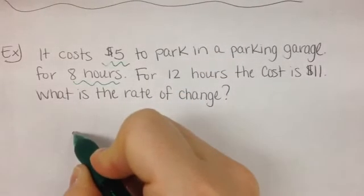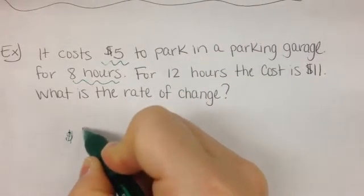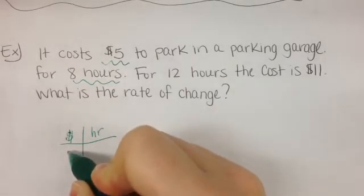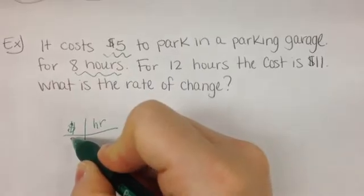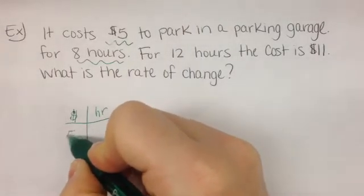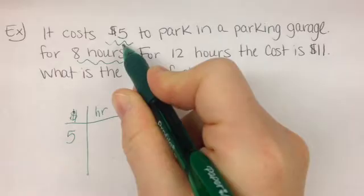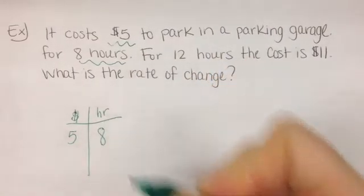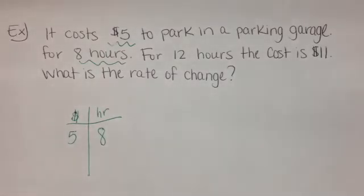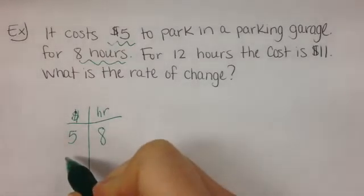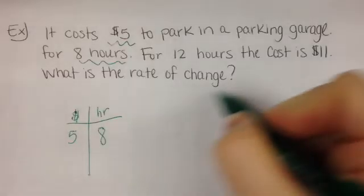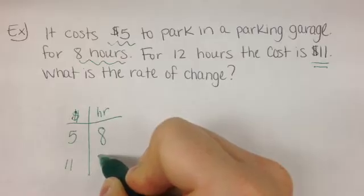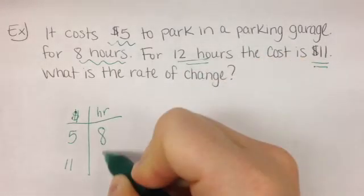Dollars and hours. So when I pull out this information, I need to pull out information about the dollar amount and the hours. So, fill some things in. How many dollars do we need? $5 goes with how many hours? 8. What else do we know? How many dollars? $11 goes with how many hours? 12 hours.